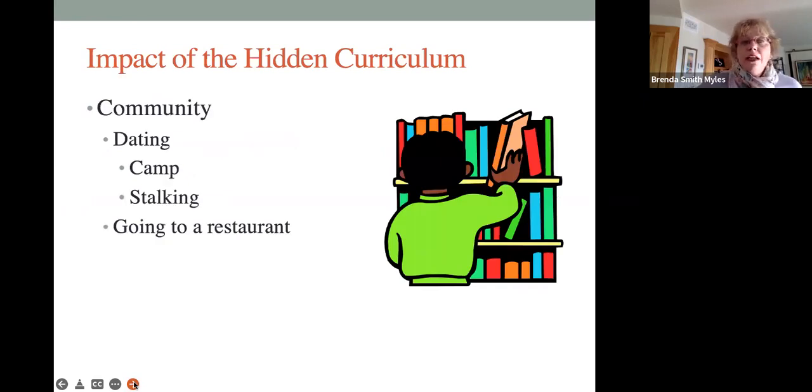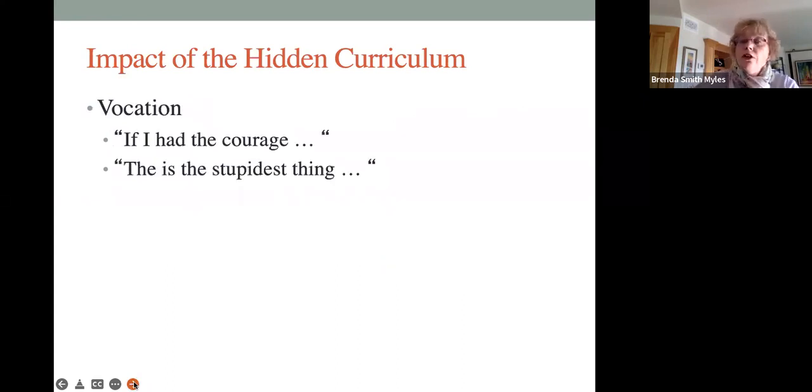There's a hidden curriculum in the community. Which restaurants do you seat yourself at? Which restaurants do you have to wait to be seated? There is a horrible challenge with stalking and individuals who have autism. Well, part of the issue is, what is the difference between getting to know someone and stalking them? To me, it can be kind of like along a spectrum. I mean, how many times can you text someone before it becomes too much? Do we teach those sort of things? We also know there's a hidden curriculum on the job. I'll be talking more about that next week.